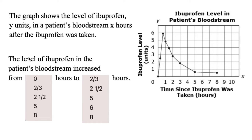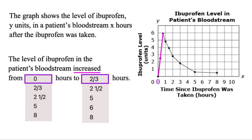For this problem, we want to find when the level of ibuprofen in the patient's bloodstream is increasing — that's just when the graph is going up. At hour zero, it starts increasing, so the interval begins at 0. It keeps increasing up until less than hour one, so it only increases for less than an hour. Which answer is less than one hour? It has to be two-thirds, since that's the only value less than one. Those are the two values.